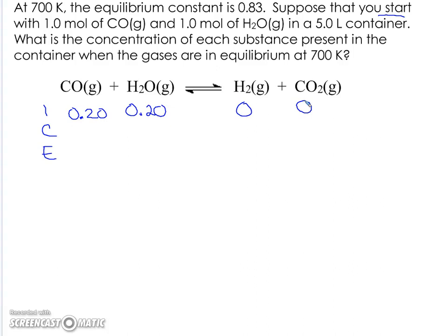In this case, these coefficients are all 1, so it's minus X, minus X, because these are going to be consumed, and plus X because they're going to be formed, and plus X because it's formed.